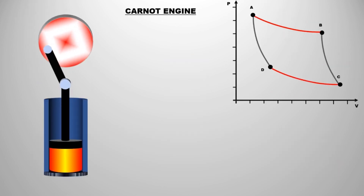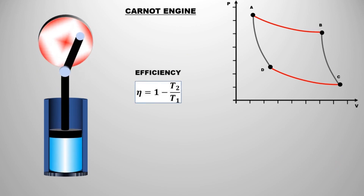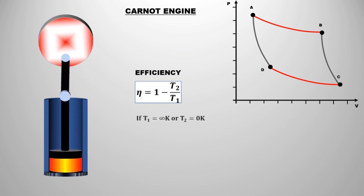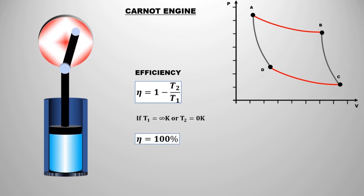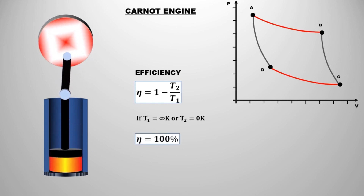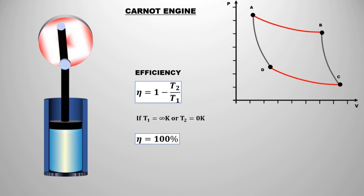The efficiency of the Carnot engine is calculated as: eta equals 1 minus Tc upon Th, where Tc and Th are the absolute temperatures of the cold reservoir and hot reservoir respectively. This cycle illustrates the maximum efficiency achievable between two thermal reservoirs. Now let's compare the Otto cycle and the Carnot cycle.